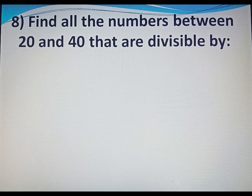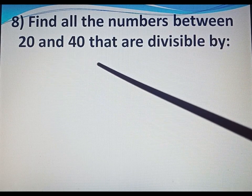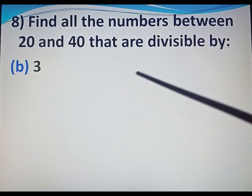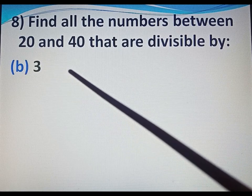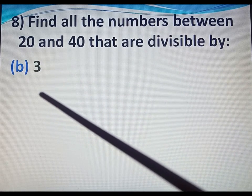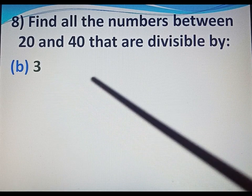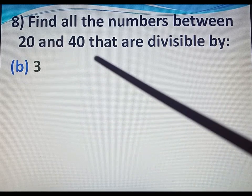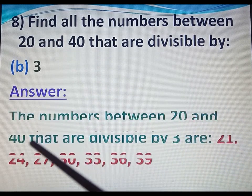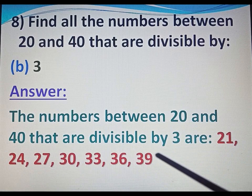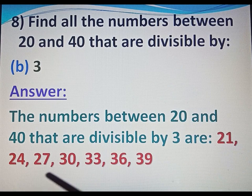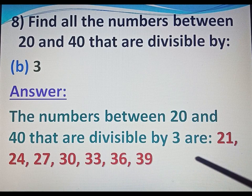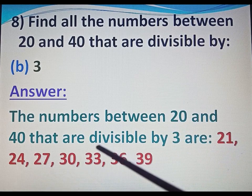Now come to question number 8. Find all the numbers between 20 and 40 that are divisible by 3. For divisibility by 3, if the sum of its digits is divisible by 3, then the number is also divisible by 3. Note that 20 and 40 are not included. The numbers between 20 and 40 divisible by 3 are: 21, 24, 27, 30, 33, 36 and 39.